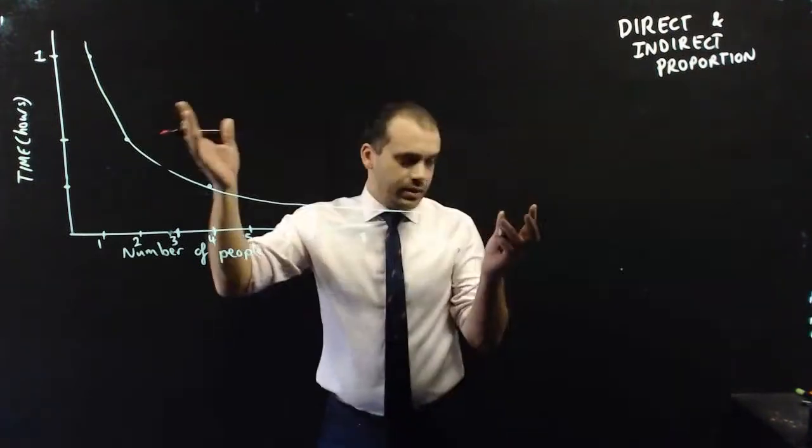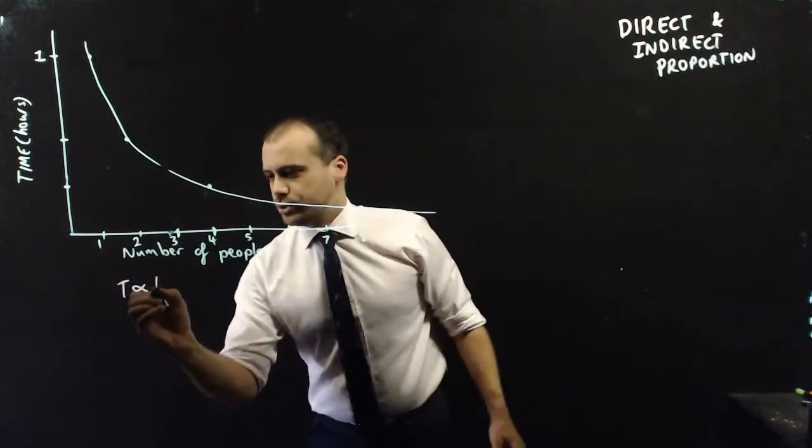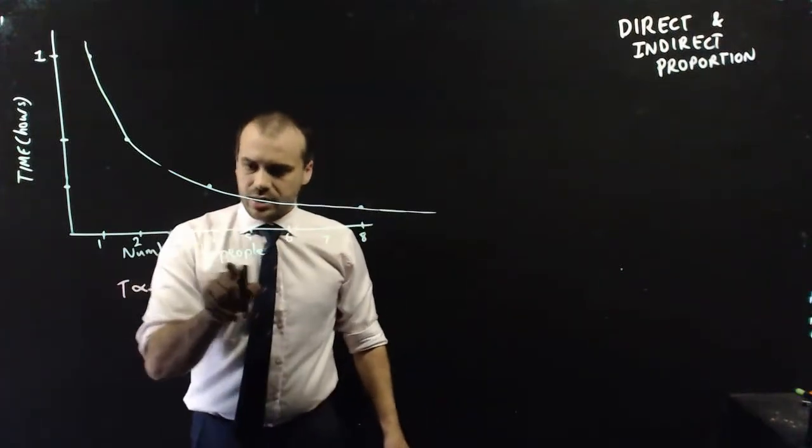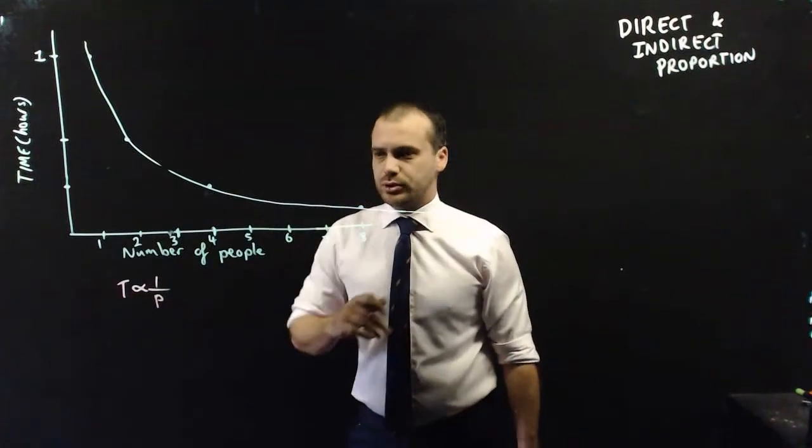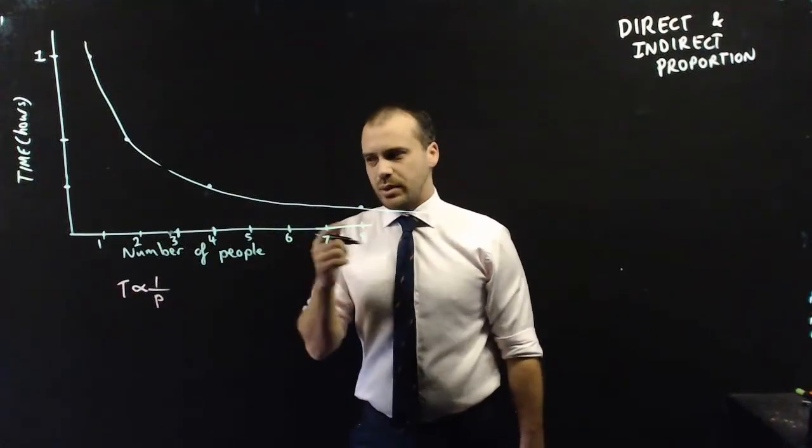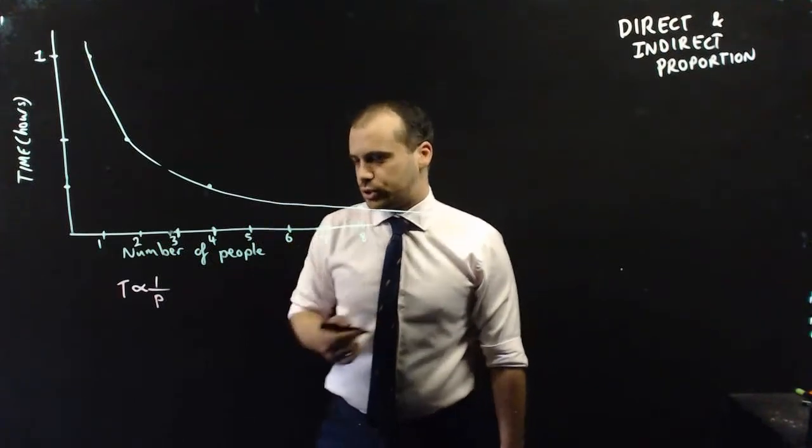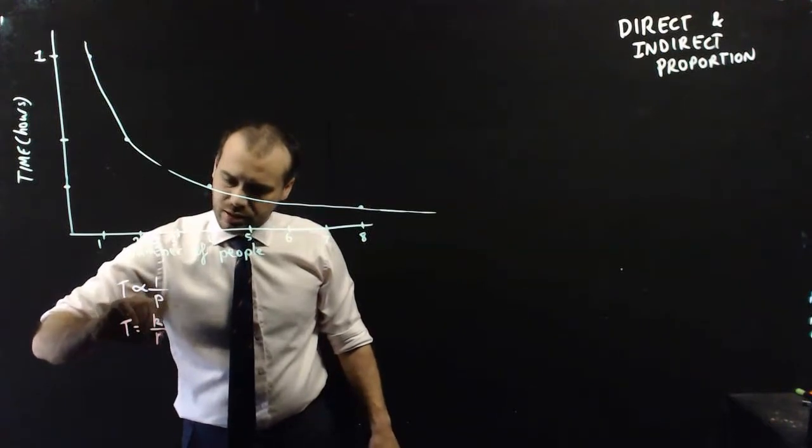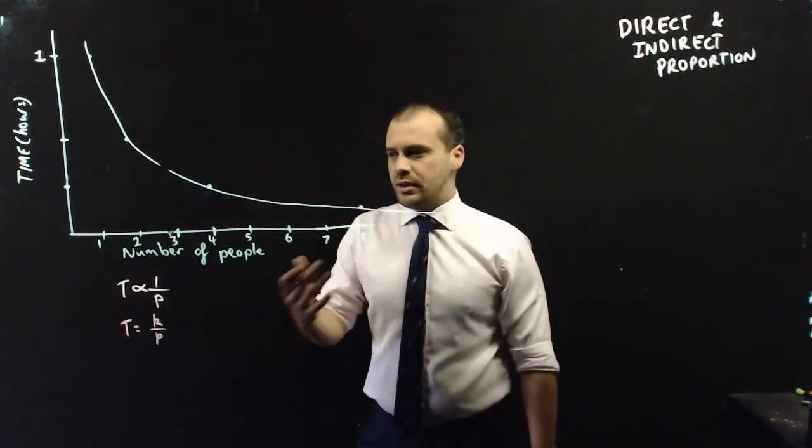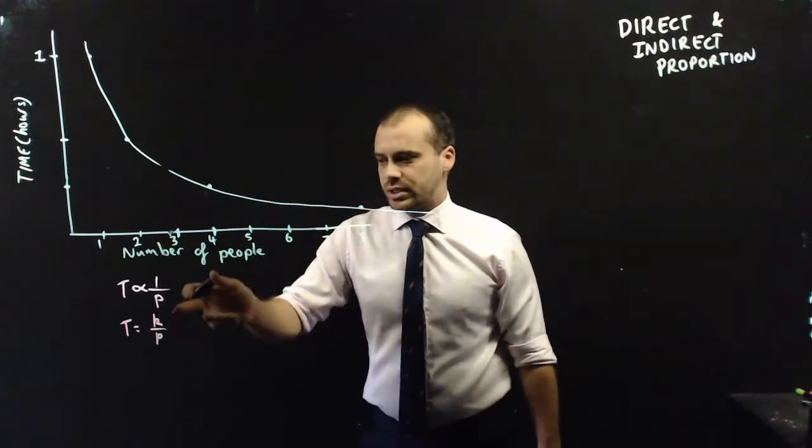And here's how we write it. In the case here, we say that t is indirectly proportional to the number of people. t is indirectly proportional to the number of people. Now, when we write that in an equation, we still get our constant of proportionality. We get t equals k over p. And then if we sub in any of these values, we can figure out what k is.